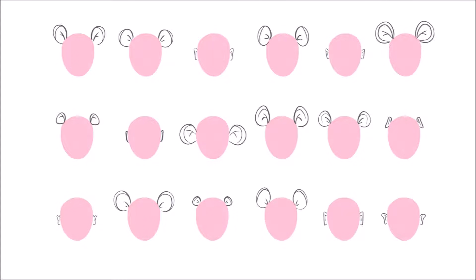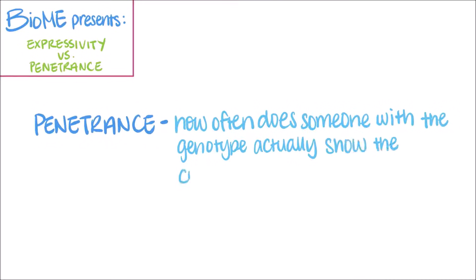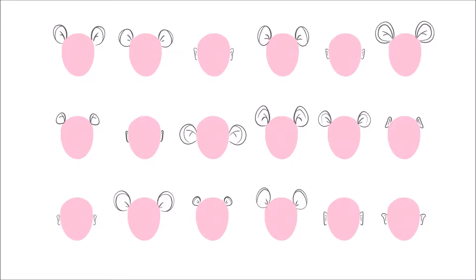You can better describe what you see by using the terms expressivity and penetrance. You might say that this mouse ear trait has incomplete penetrance. Penetrance means how often does someone with a specific genotype actually show the corresponding phenotype? In this case, 11 out of 18 people is showing the mouse ear phenotype. So, you can say that this mouse ear trait has around 61% penetrance.